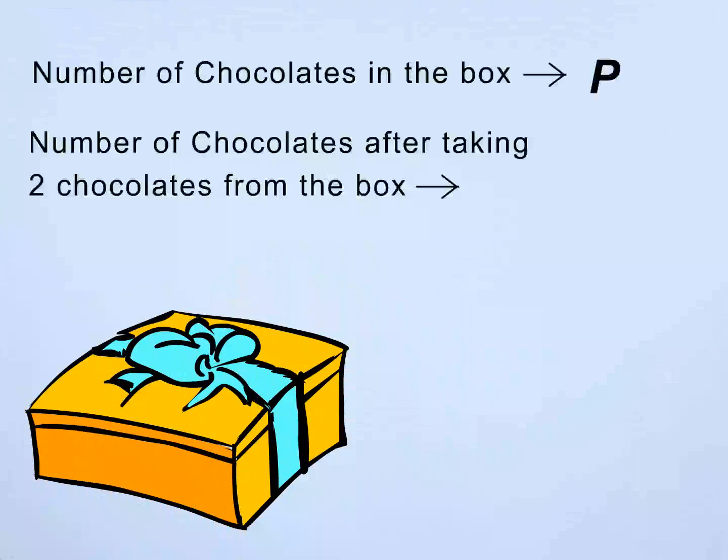Let us take another example. This box has P chocolates. If I take two chocolates from the box, the box will now contain two less than before. We say that there are P minus 2 chocolates in the box now.